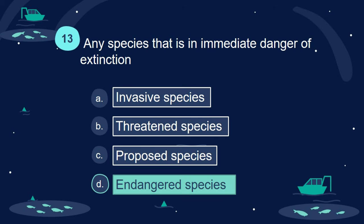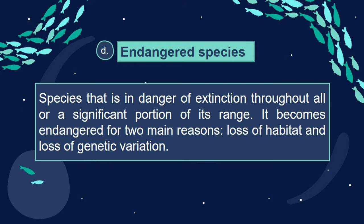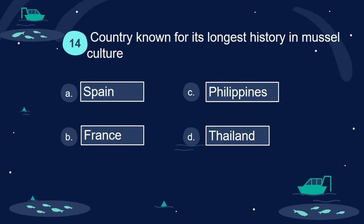Answer: D. Endangered species. A species that is in danger of extinction throughout all or a significant portion of its range. It becomes endangered for two main reasons: loss of habitat and loss of genetic variation.